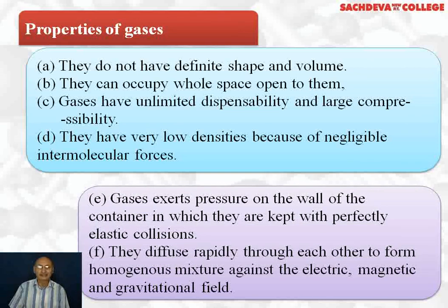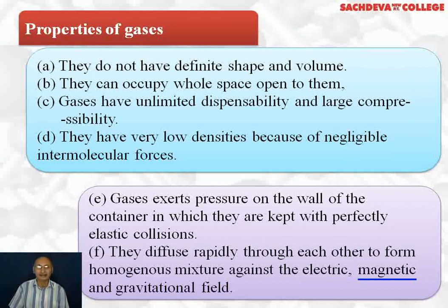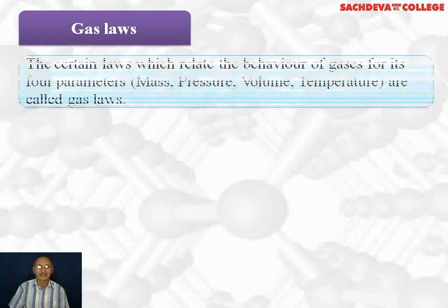Gases exert pressure on the walls of the container in which they are kept, with perfectly elastic collisions. Elastic collision means there is no net loss of energy; rather, there is a transfer of energy. Gases also diffuse rapidly through each other to form a homogeneous mixture, against electric, magnetic, and gravitational fields. Next, we are taking up gas laws.